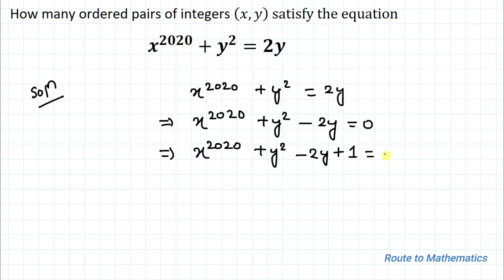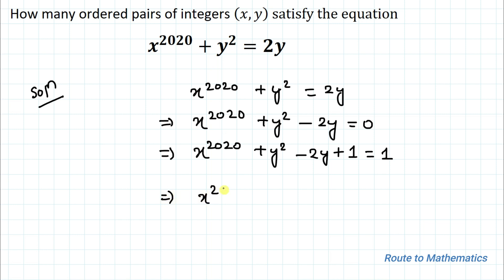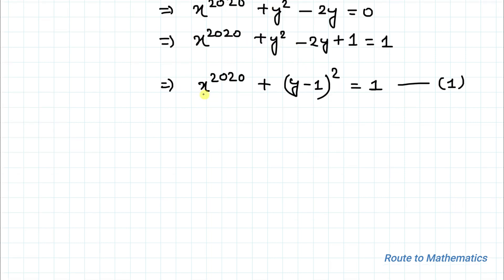We have plus 1 equals 1. One thing to notice here is that we can apply the a minus b whole square identity — that is a squared minus 2ab plus b squared. Applying this identity, we can write x to the power 2020 plus (y minus 1) whole square equals 1. Let's take this as equation 1.